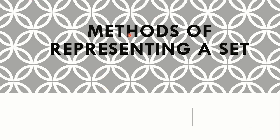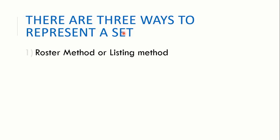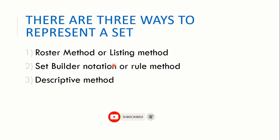Today we will discuss methods of representing a set. There are basically three ways to represent a set: first, the roster method or listing method; second, set builder notation or rule method; third, the descriptive method. Now we will discuss each method individually and how they are used to represent a set.